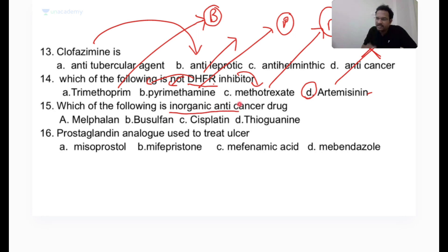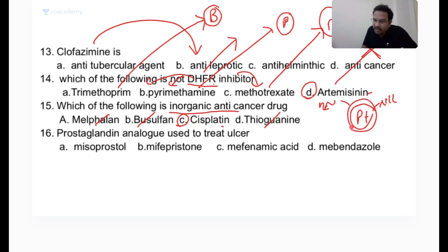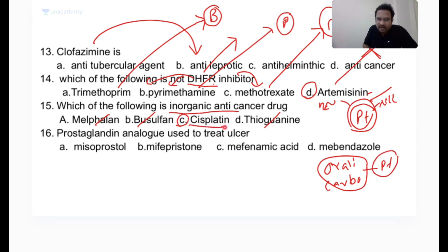Cisplatin is a completely inorganic compound — it contains platinum and no carbon. Melphalan and busulfan are alkylating agents (organic). Thioguanine is an anti-metabolite (organic). Cisplatin's toxicity is notable; oxaliplatin and carboplatin are platinum-containing derivatives but are organic platinum compounds, whereas cisplatin is completely inorganic.